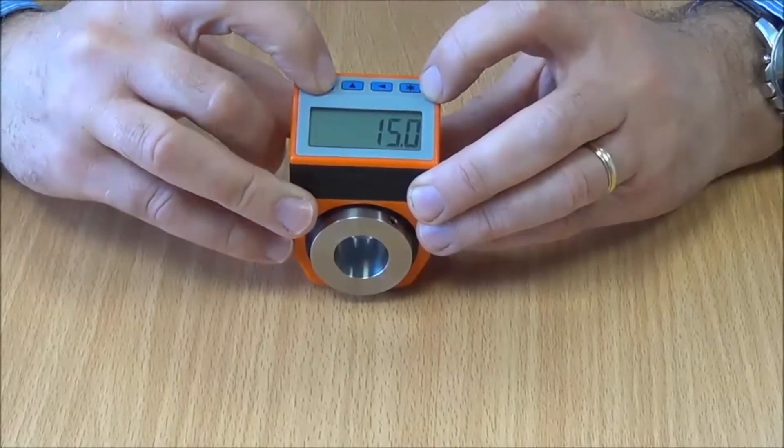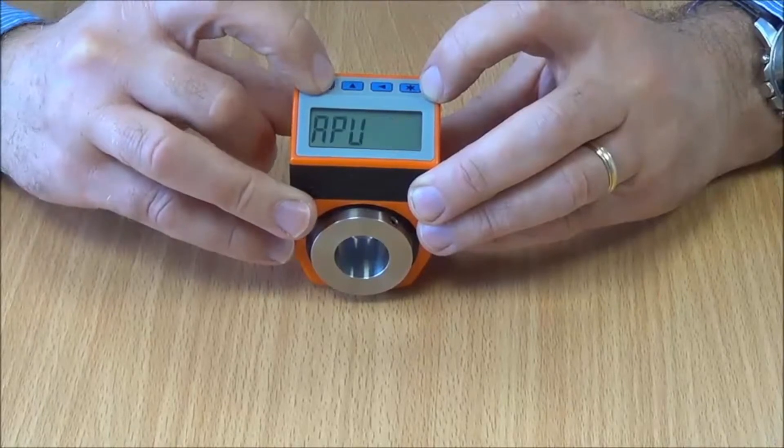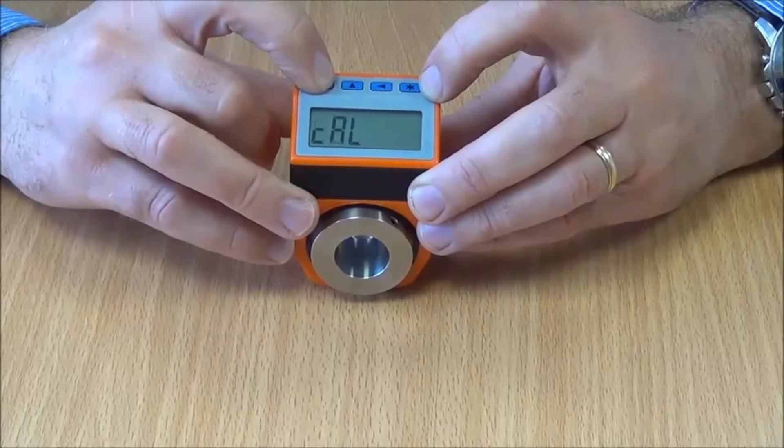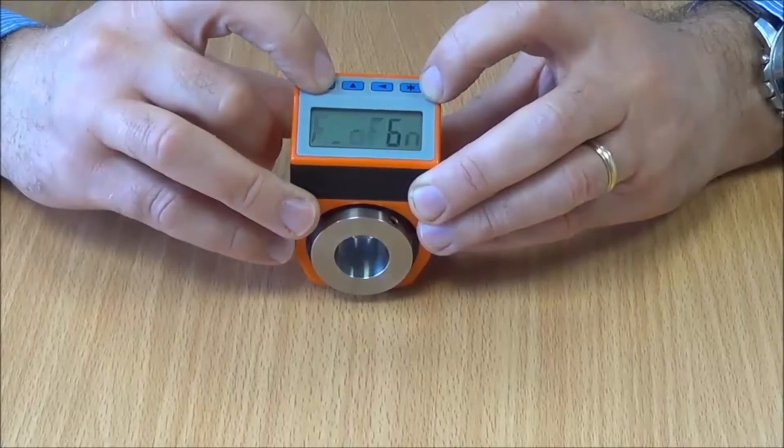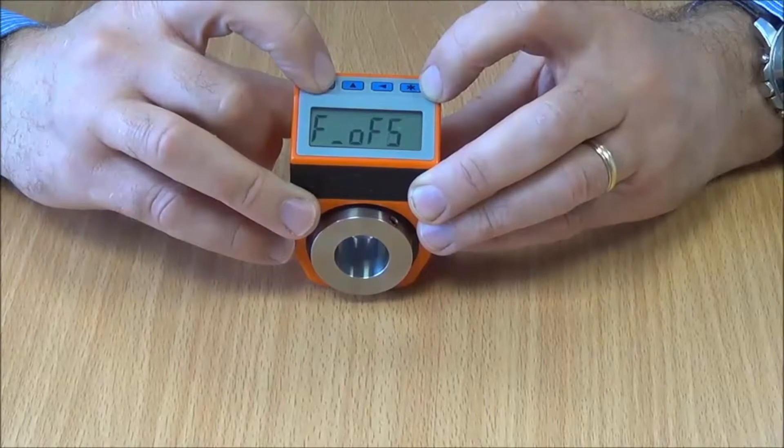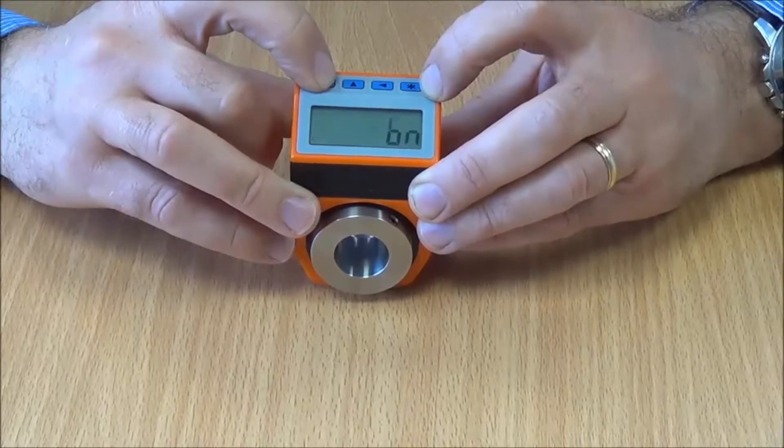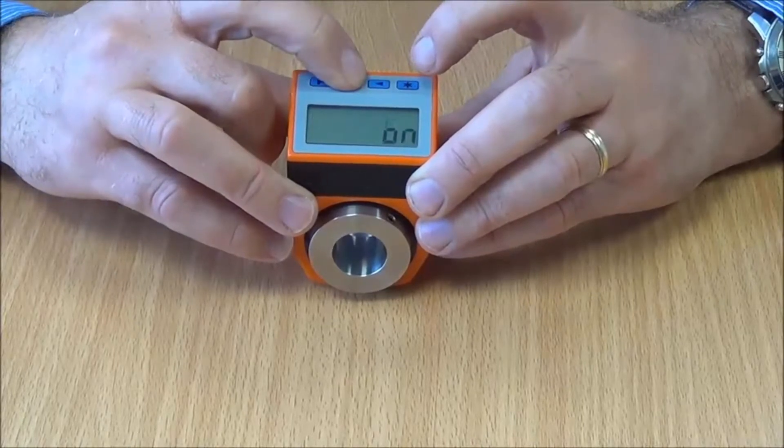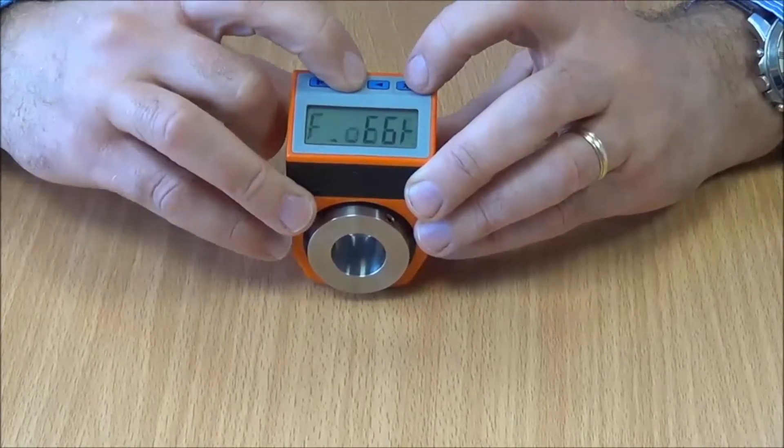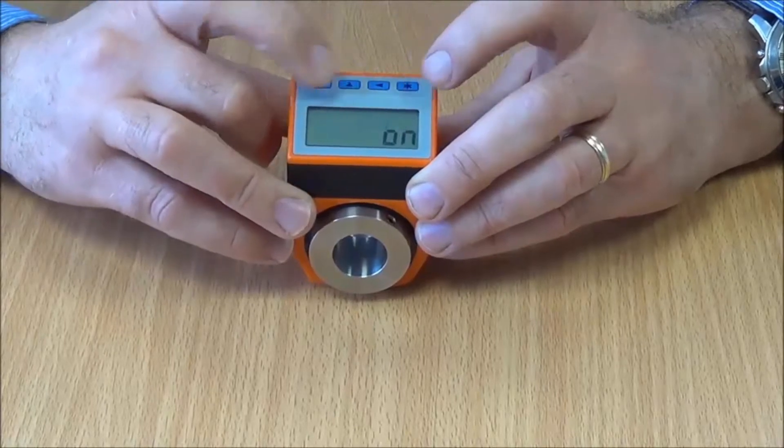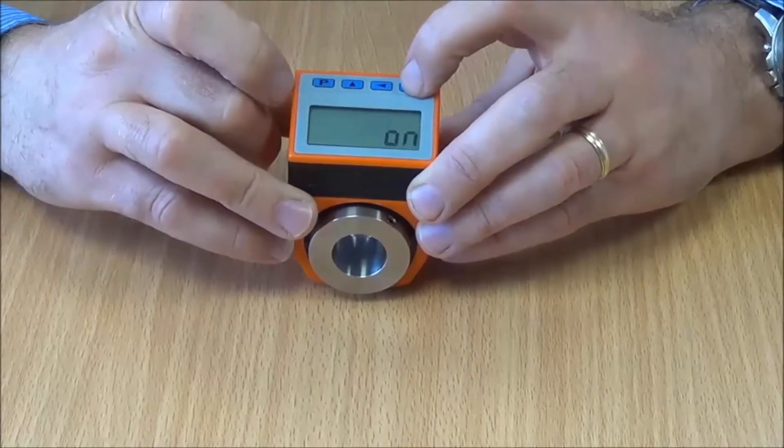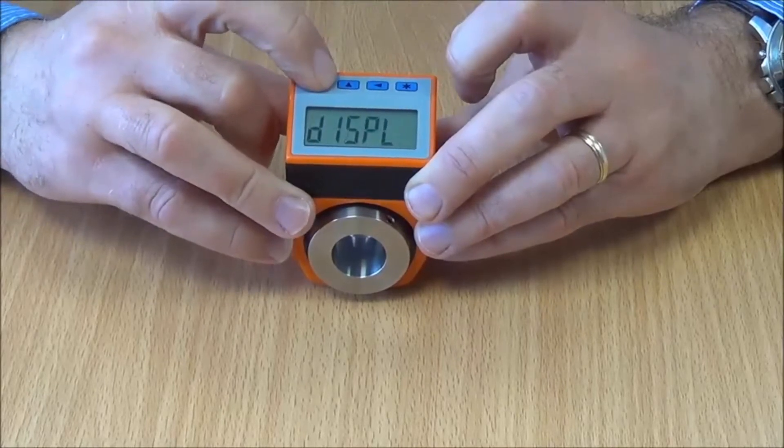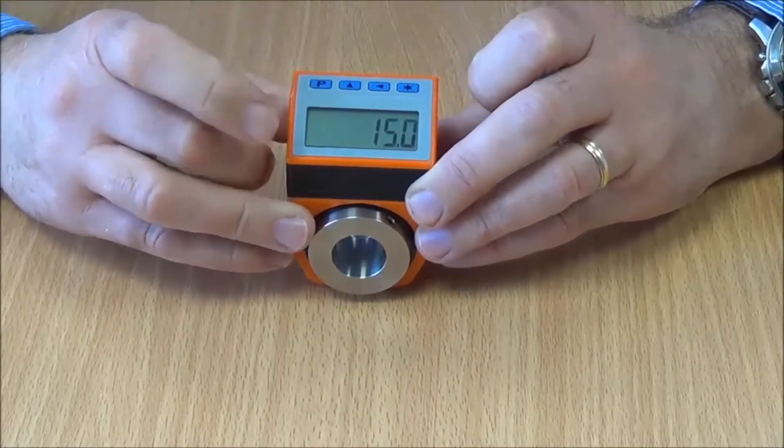We press the P button for five seconds, step down by the P button to the incremental function which is the F-OFS, and we then switch that on—which it is, that's the off position—so if we switch it on and press the star button to register the change, then if we come out we're at the